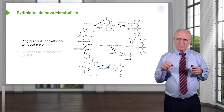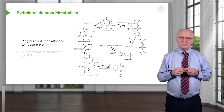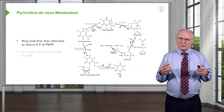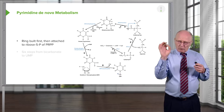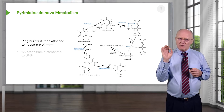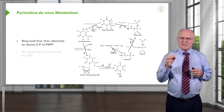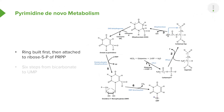We're looking at this from a zoomed-out view to get an idea about how this is happening. We remember that the pyrimidine ring is made separately from the sugar and then later is attached. We see that happening here — the attachment of the ring occurs in reaction number five, where the pentose sugar appears for the first time. In reaction number six, we're making the UMP.